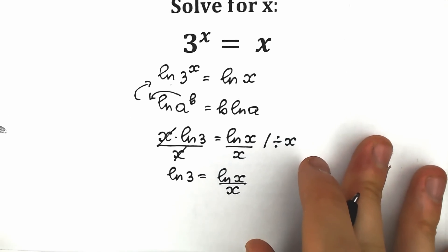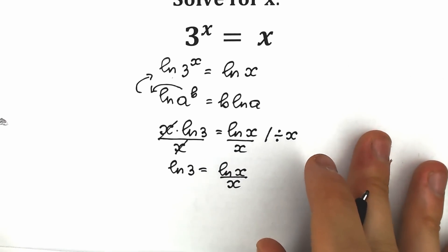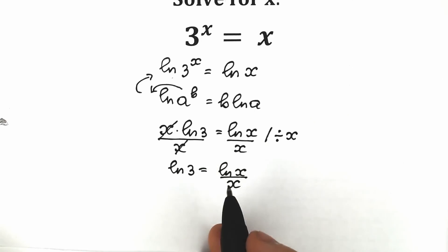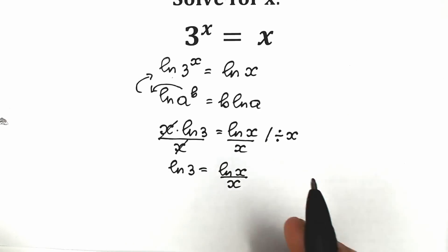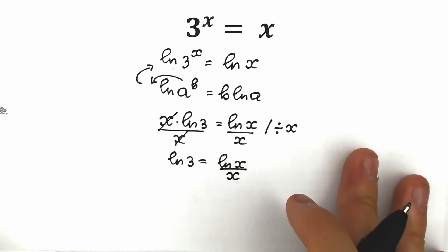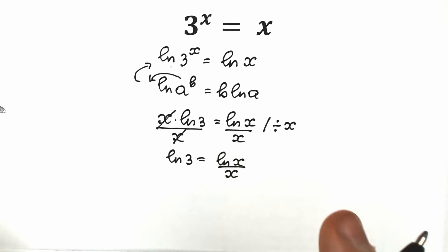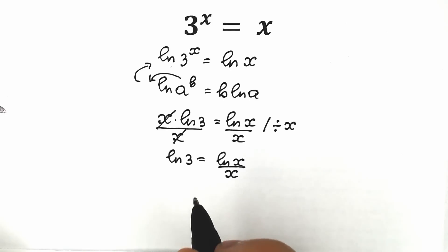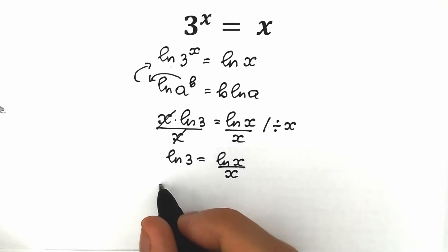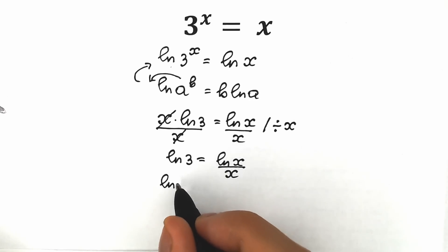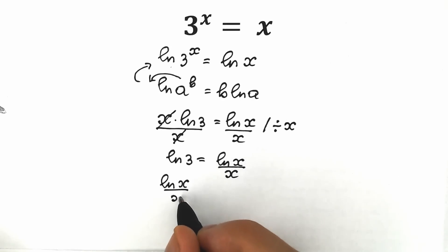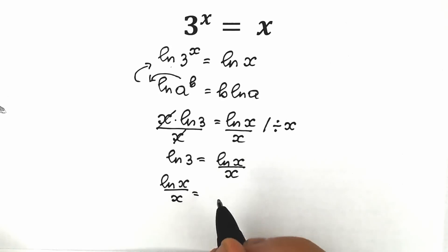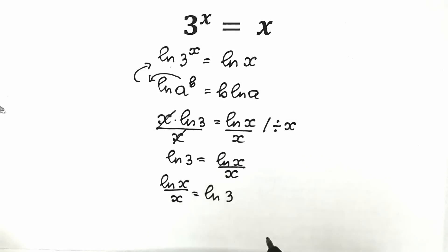A lot of students prefer variables on the left side, so let's change position — it changes nothing for us but it helps with understanding. So we have natural log x over x equal to natural log 3.